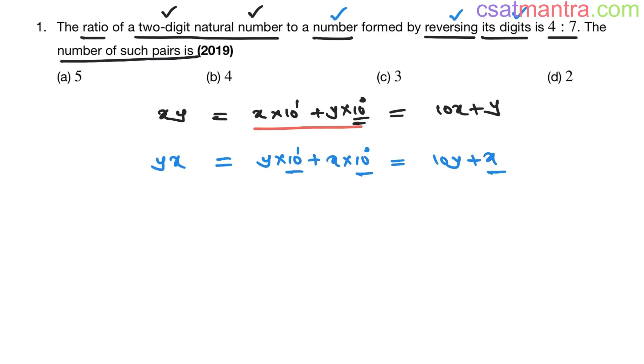This is how we represent any number in decimal system my friends. This is 1's position, 1 is 10 power 0. This is 10's position, 10 is 10 power 1. Similarly this is 1's position 10 power 0. This is 10's position 10 power 1. Clear, right?